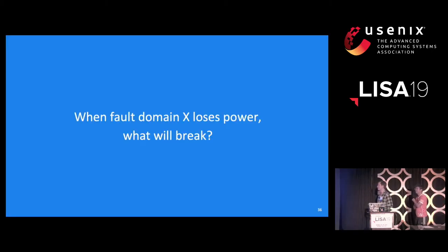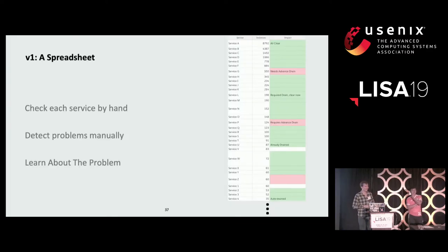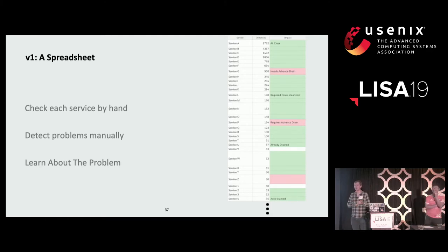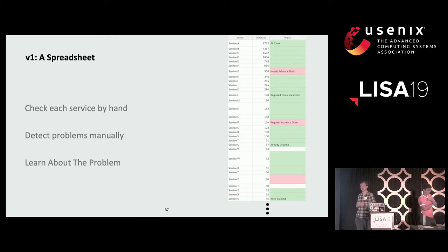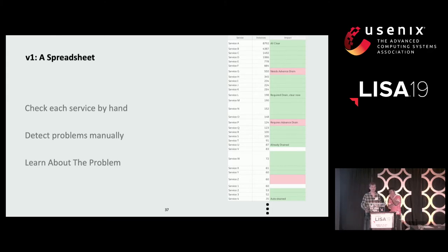Now we had to answer: when fault domain X loses power, because we promised to unplug it, what is going to break? Here's V1 of our solution — it's highly technical. It's a spreadsheet. For each row we put a service located on one of the servers in that fault domain, and we went through each service by hand and asked: what's going to happen when we unplug this service? Will it fail over gracefully, or will we have an issue? This was a bit tedious but it taught us a ton about the problem.